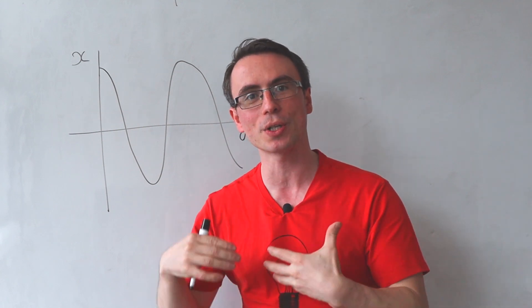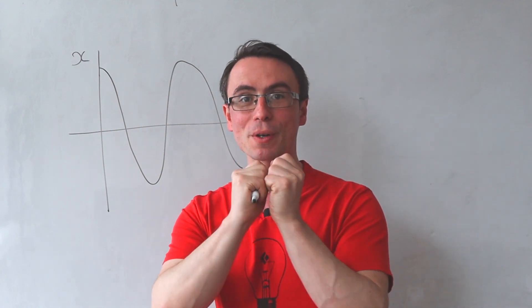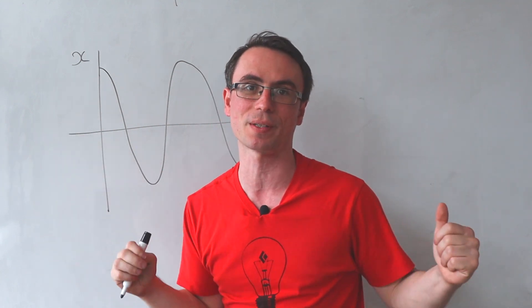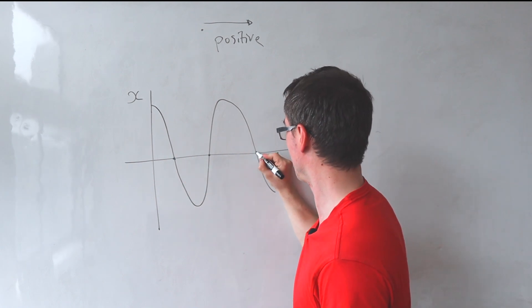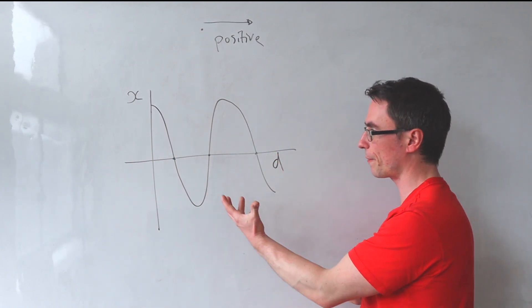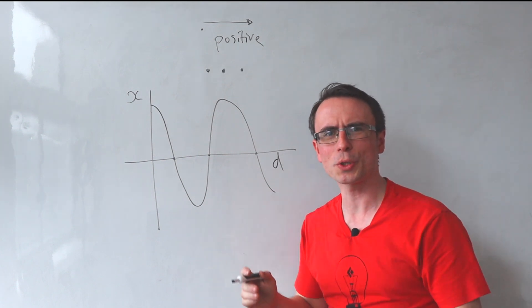And if it's a rarefaction, it will appear as if all the points are moving away from that point. So this one, this one, this one, and this one could be compressions or rarefactions. How do we determine which one's which?